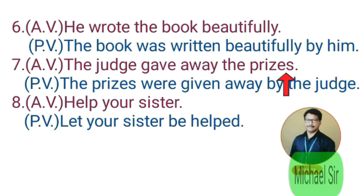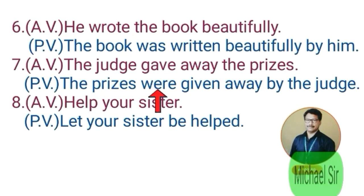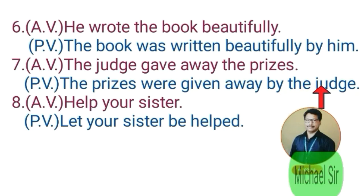Passive voice: 'The book was written beautifully by him.' Seventh example. Active voice: 'The judge gave away the prizes.' 'The judge' is subject, 'gave' is verb in simple past, 'away' is adverb, and 'the prizes' is object. In passive voice, 'the prizes' becomes subject. Since 'the prizes' is plural, we write 'were,' then the third form 'given,' then the adverb 'away,' then 'by the judge.' Passive: 'The prizes were given away by the judge.'